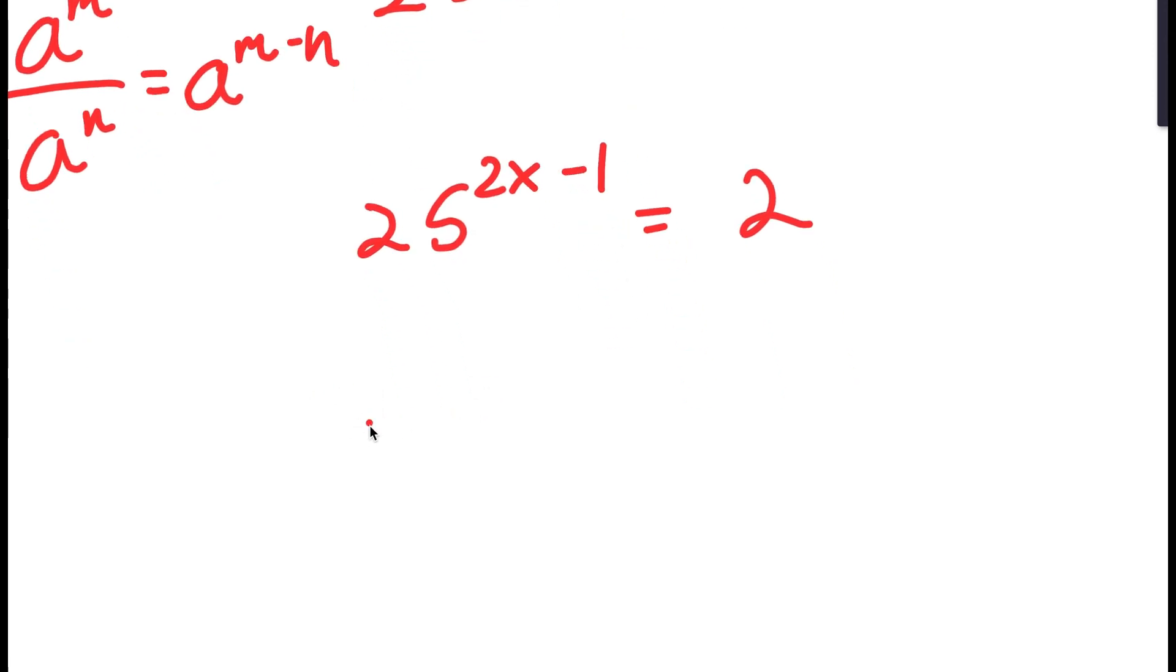So now, I'm going to take the log on both sides. So I get log 25 to the power of 2x minus 1 is equal to log 2.